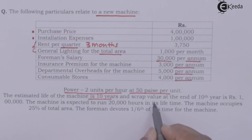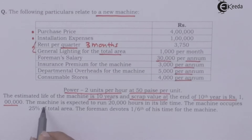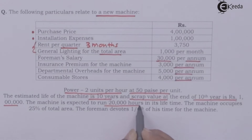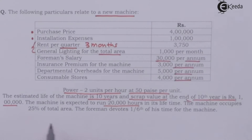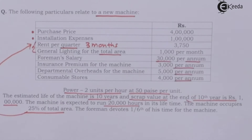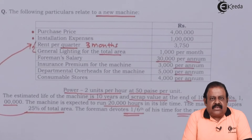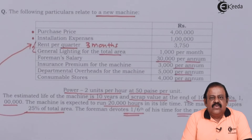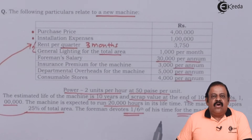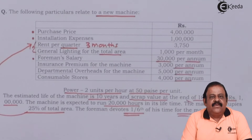The estimated life of the machinery is 10 years and the scrap value at the end of the 10th year is rupees 1 lakh. The machine is expected to run 20,000 hours in its lifetime. The machine occupies 25% of the total area — this relates to apportionment of rent. The foreman devotes one-sixth of his time for this machine, which we must consider while apportioning foreman salary.